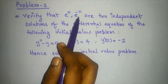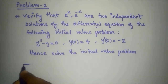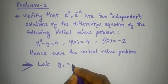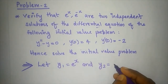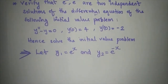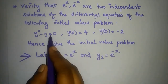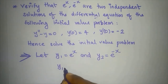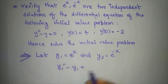So what we have is: the differential equation is y'' - y = 0, and the dependent solutions are e^x and e^(-x). We will verify that. So we will verify that the solution is e^x and e^(-x). That is y1 = e^x and y2 = e^(-x). For y1 = e^x in this differential equation, we will check that y1'' minus y1 equals 0.